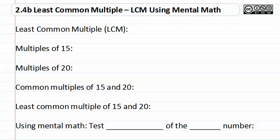2.4b: least common multiple using mental math. The least common multiple is simply the smallest multiple of several numbers.